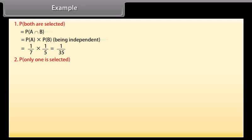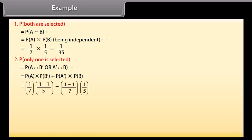2. Probability that only one is selected = P(A ∩ B′) + P(A′ ∩ B) = P(A) × P(B′) + P(A′) × P(B) = 1/7 × (1 − 1/5) + (1 − 1/7) × 1/5 = 4/35 + 6/35 = 10/35 = 2/7.